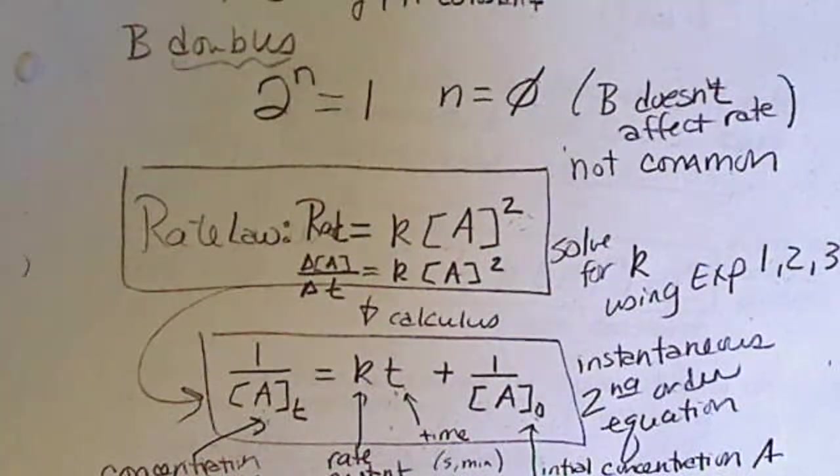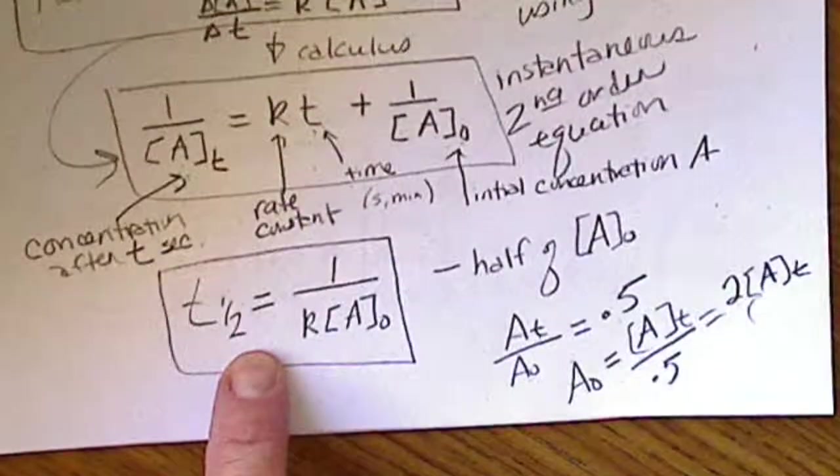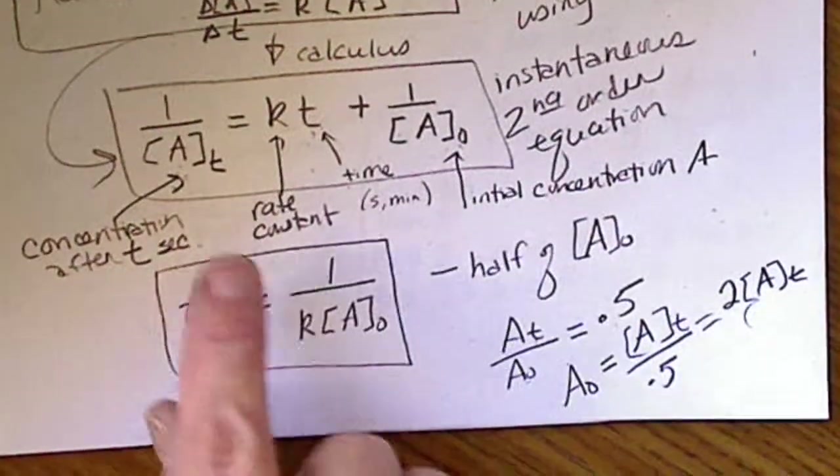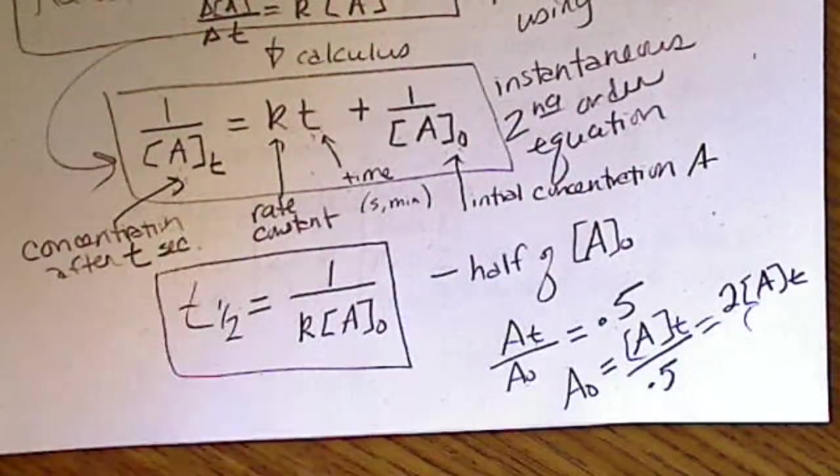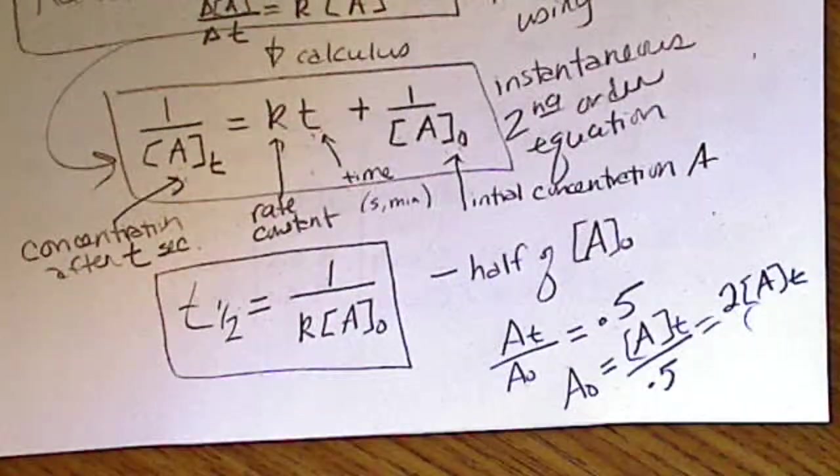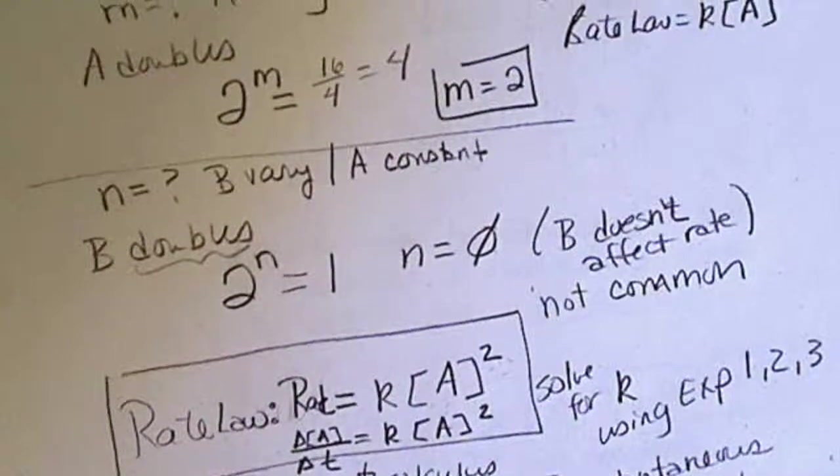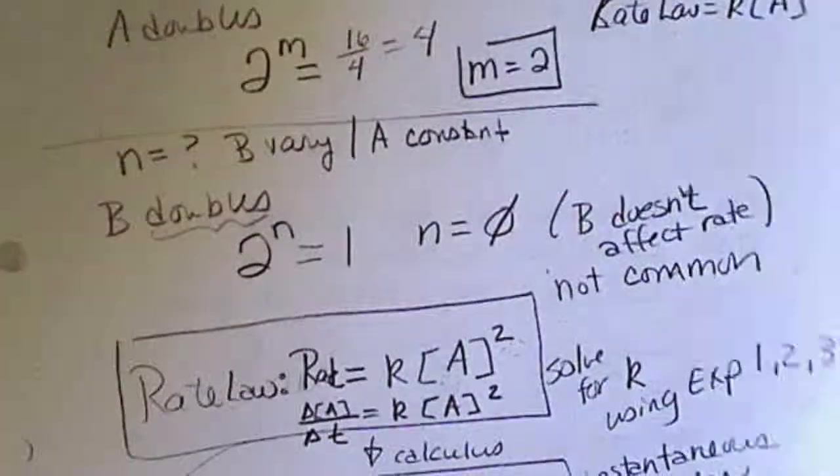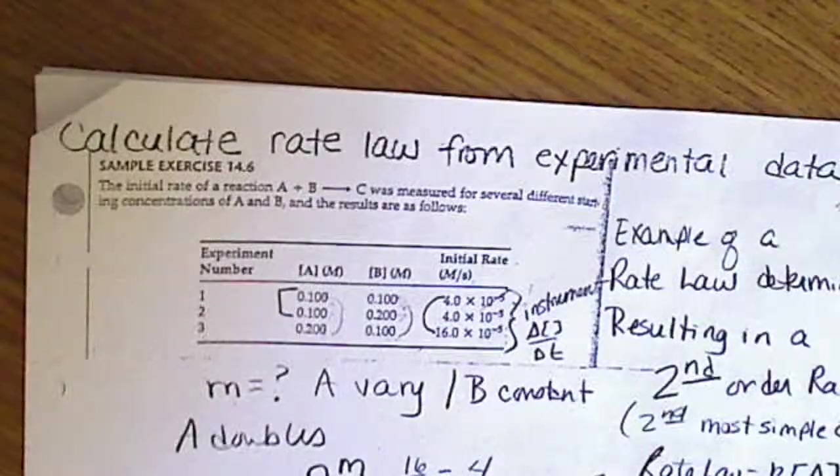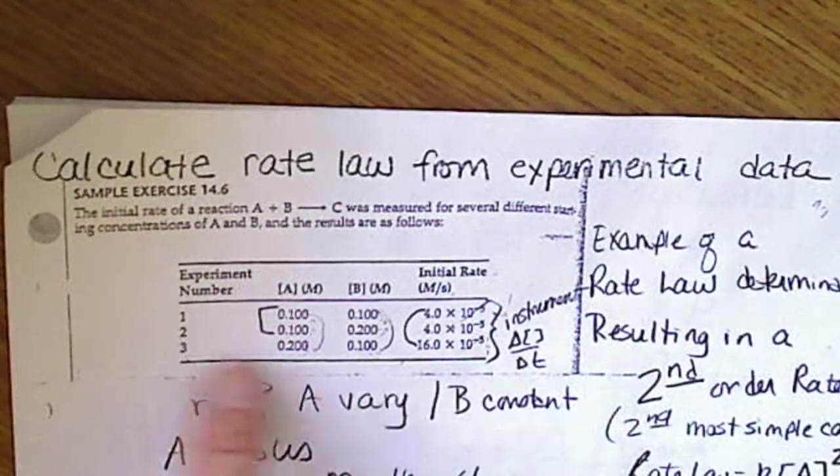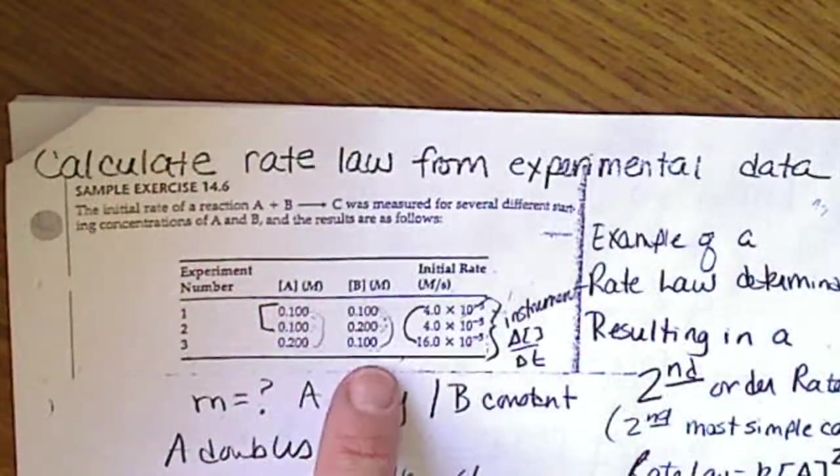The problem might give us the half-life and then we would use the half-life to solve for K. And then we might be looking for a final concentration. So, again, a second order rate law could be determined from this type of data. Any rate law is possible.